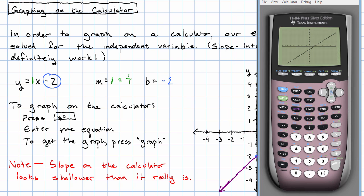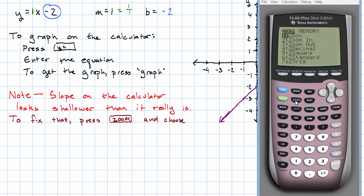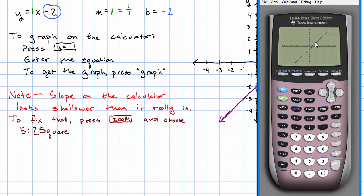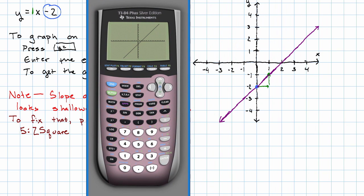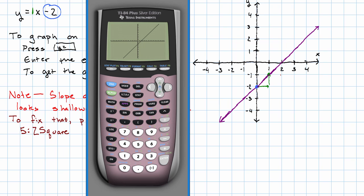What if we want to really see what the slope looks like? Well, if we press this zoom button, and the option we want is this option number 5, z square. And now we see that at least the slope looks the same on the calculator and in our picture.